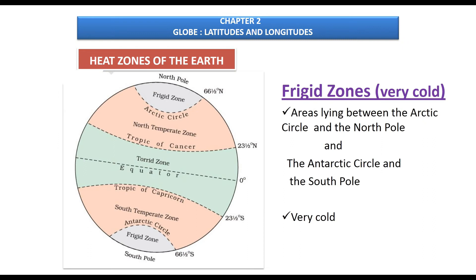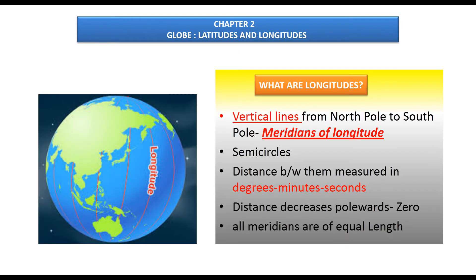The third heat zone is the Frigid Zone. The areas between the north pole and the Arctic Circle in the northern hemisphere, and the south pole and the Antarctic Circle in the southern hemisphere, experience very cold conditions. The slanting sun rays provide very little heat, so these two areas are known as the Frigid Zone.